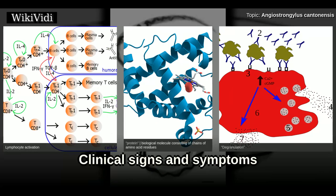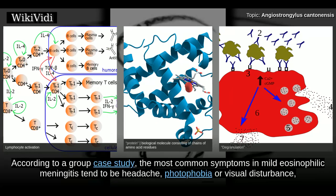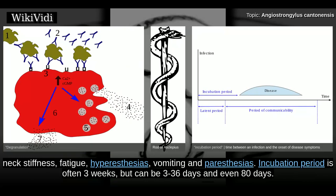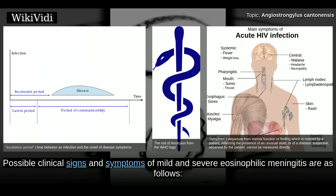Clinical Signs and Symptoms. According to a group case study, the most common symptoms in mild eosinophilic meningitis tend to be headache, photophobia or visual disturbance, neck stiffness, fatigue, high paresthesias, vomiting, and paresthesias. Incubation period is often 3 weeks, but can be 3 to 36 days and even 80 days. Possible clinical signs and symptoms of mild and severe eosinophilic meningitis are as follows.